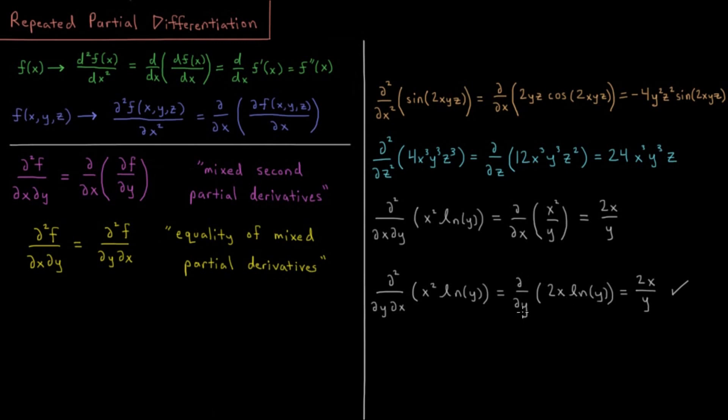Then we have the derivative with respect to y of this. Derivative of log y is 1 over y, 2x being a constant, and we get the same result that we had before, 2x over y. No matter whether we took the derivative with respect to y or with respect to x first, it didn't matter. We got the same result because these mixed partial derivatives are equal.